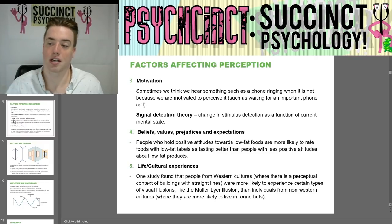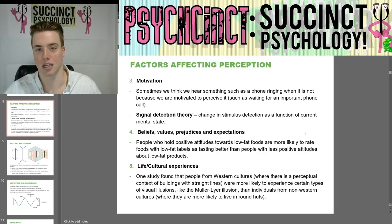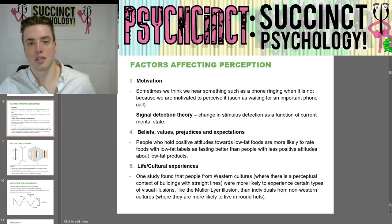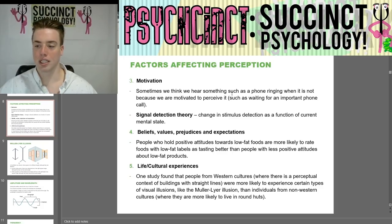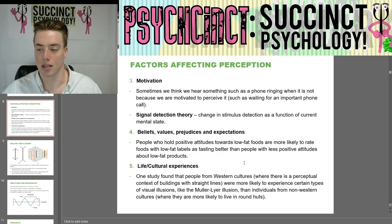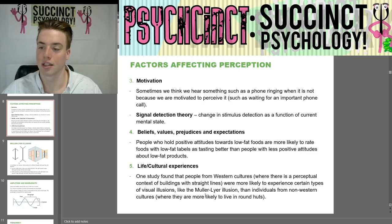Signal detection theory describes change in stimulus detection as a function of your current mental state — that eagerness or mental state of really waiting for a call changes your stimulus detection. We also have beliefs, values, prejudices, and expectations affecting perception. For example, people who hold positive attitudes towards low-fat foods are more likely to rate foods with low-fat labels as tasting better than people with less positive attitudes.